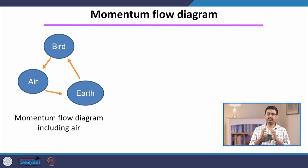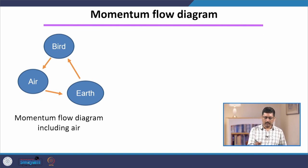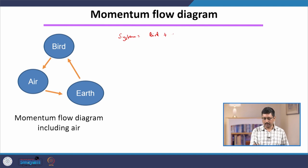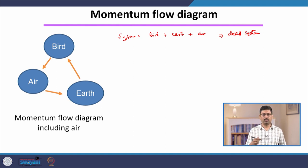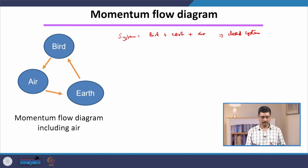Now we look at this problem in a slightly different way. So far we used the free body diagram technique, taking the bird as the system. There is another way: instead of bird alone, take the bird plus the earth plus the air as our system. This is a closed or isolated system — there is no external force acting on it if this is our choice of system. So the total momentum is zero, but there can be momentum transfer from one component of the system to another.